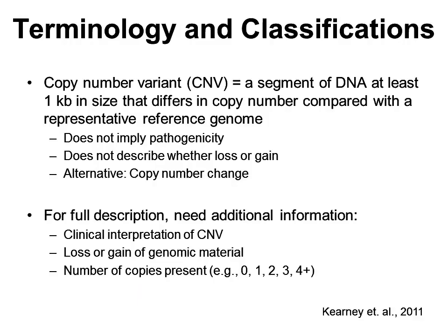Moving on to terminology and clinical classification: the term copy number variant is the preferred term for describing a segment of DNA that is at least one kilobase in size that differs in copy number compared with a representative reference genome. But this is a general term that doesn't provide any information about the pathogenicity or clinical impact of the CNV. It also does not describe the type of copy change, whether it is a loss or gain of material, and how many copies are present. Therefore, for a clinical microarray report, a more complete description of any reported CNV is needed, including the clinical interpretation, whether it is a loss or gain, and the exact copy number present in the patient.